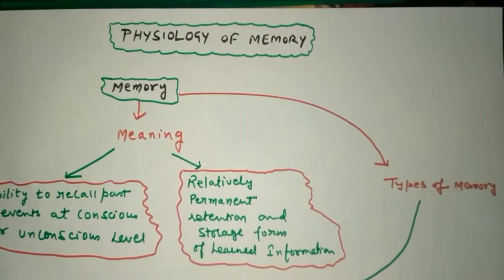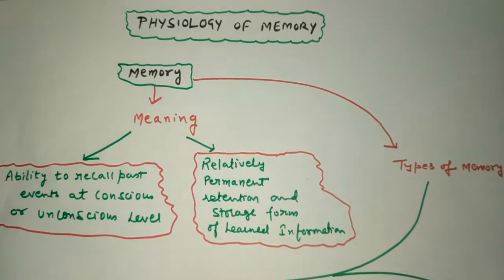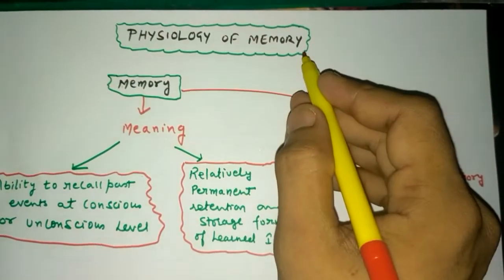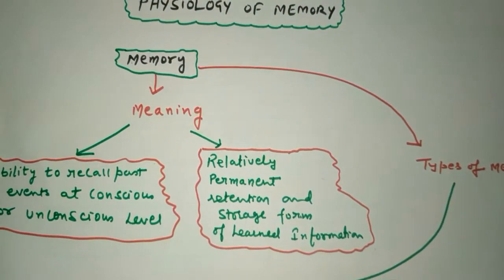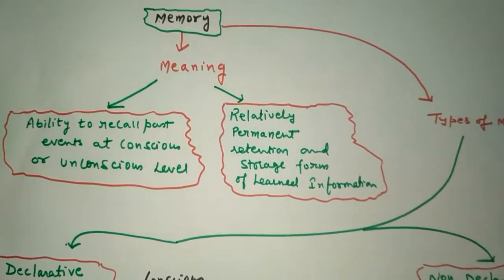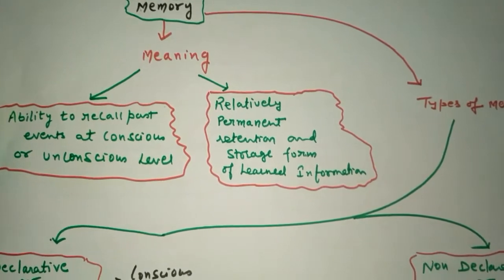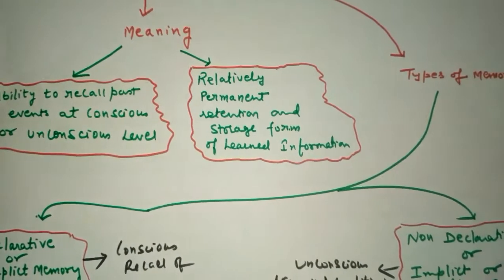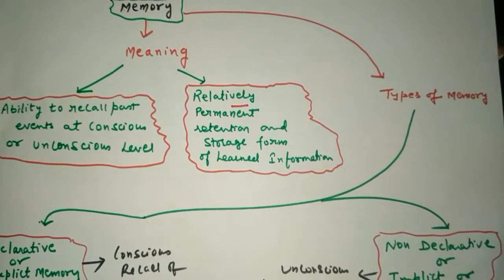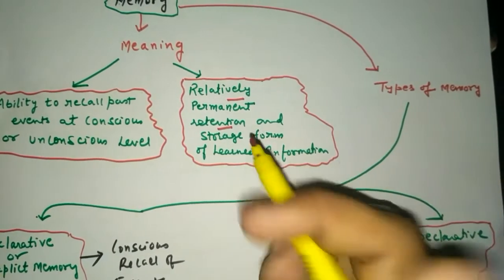Welcome back friends. This informative video tutorial is related to the types of memory and functioning of memory, named as physiology of the memory. Memory has different meanings — it is the ability to recall past events at a conscious or unconscious level. It is relatively permanent; some types of memories are permanent and some are volatile.